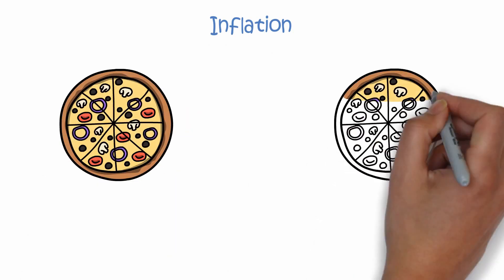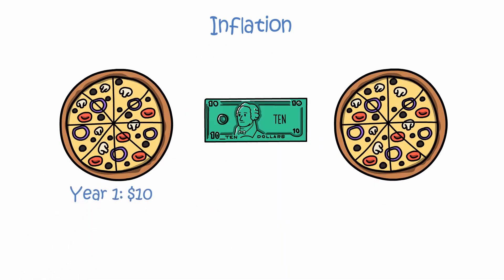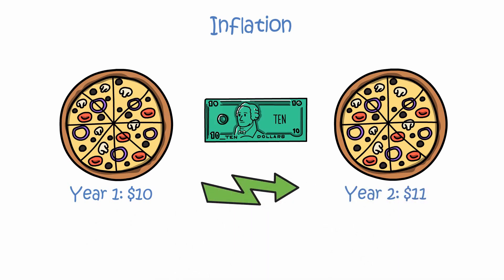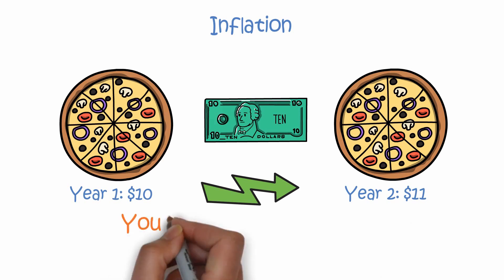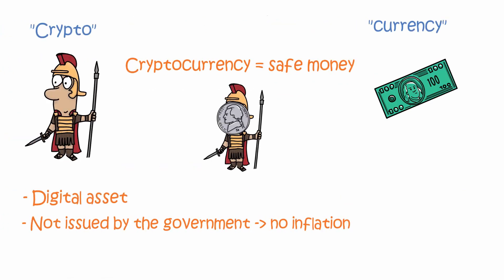If you don't know what inflation means, simply put, it means that you lose your purchasing power. For example, if you have 10 dollars, you could buy one pizza for 10 dollars. But because of inflation, the pizza will cost 11 dollars next year, which means you can't buy it anymore. One reason for inflation is the fact that dollar bills can be printed by the government — more and more bills are printed all the time, which makes the value of the dollar weaker.